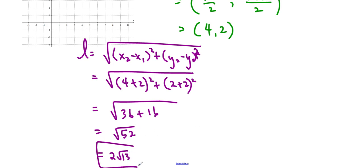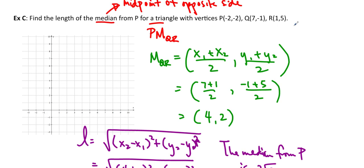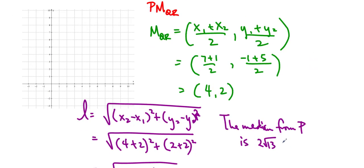So that is our solution. The median from P is 2√13. Let's see what the units are. It doesn't say. Units long.